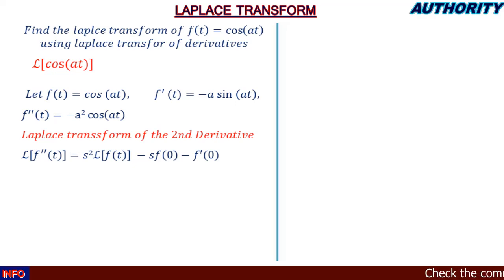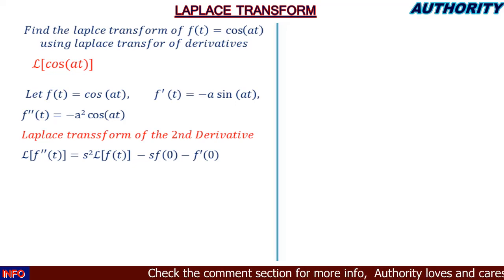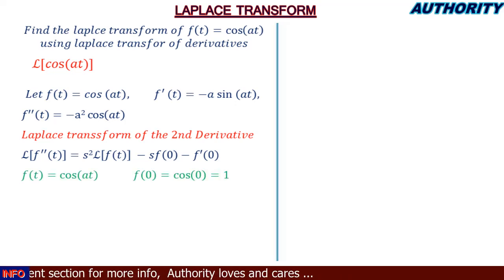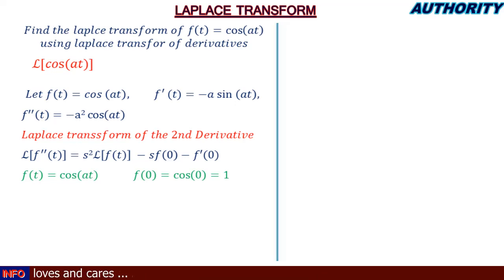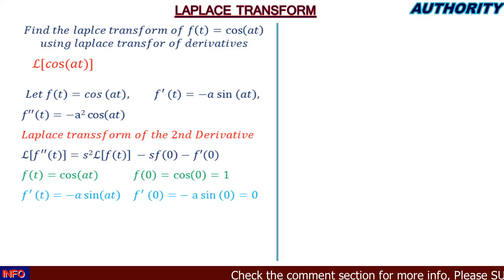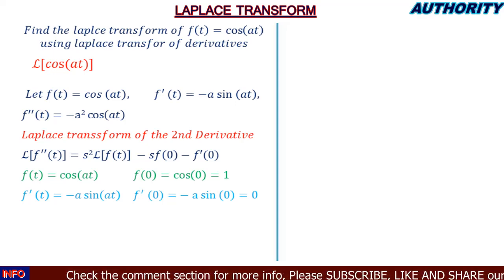Now we need to find f(0) and f'(0). Since f(t) = cos(at), substituting t = 0 gives f(0) = cos(0) = 1. For the first derivative, f'(t) = −a·sin(at), so substituting t = 0 gives f'(0) = −a·sin(0) = 0.